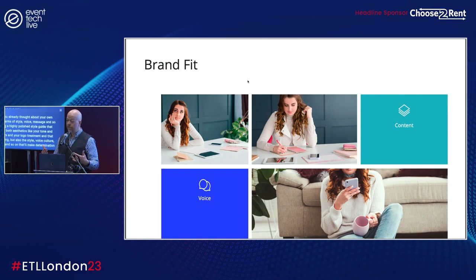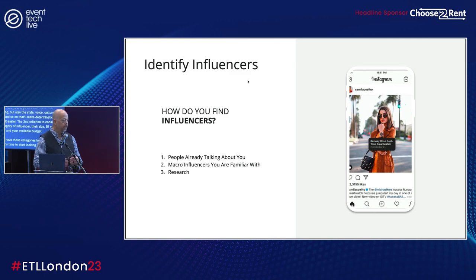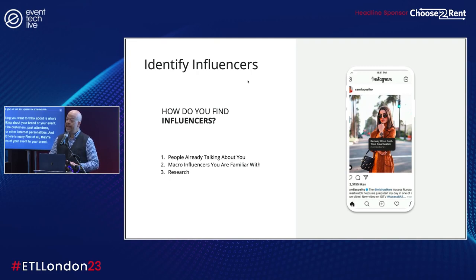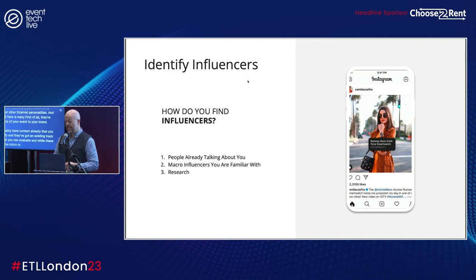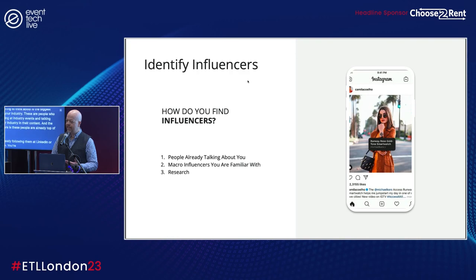The second criteria is the category of influencer — their size, i.e. mega, macro, micro, or nano — and your available budget. Once you have those criteria in mind, it's time to start looking for influencers. The first thing you want to think about is who's already talking about your brand or your event — that might be customers, past attendees, bloggers, or other internet personalities. They're already fans, they probably have content you can amplify, and they have an existing track record you can evaluate. The next thing to consider is the biggest names in your industry — people who are speaking at industry events and creating content about your industry. You're already following them on LinkedIn or Instagram, so you won't have to do a lot of research to identify them.